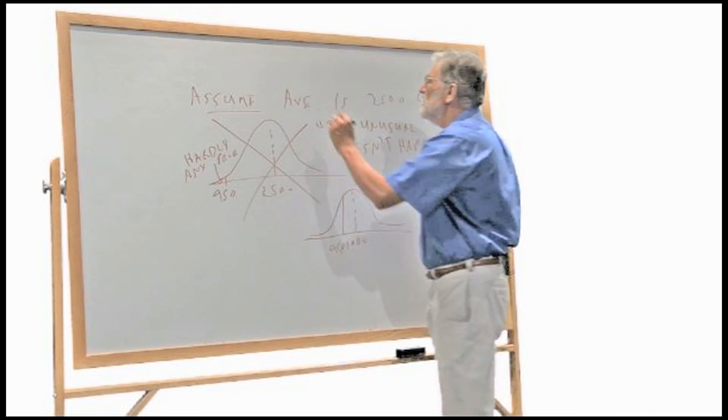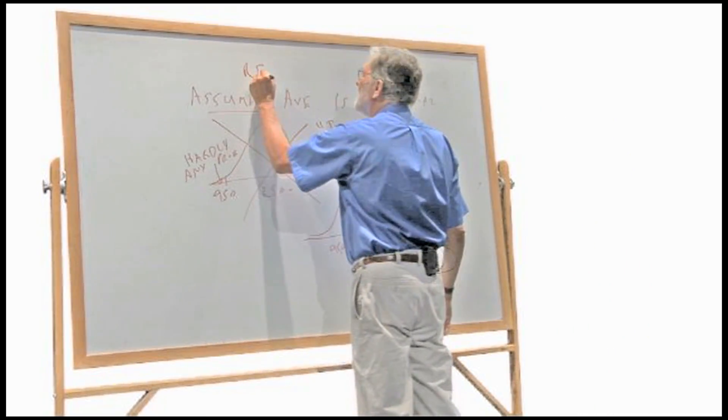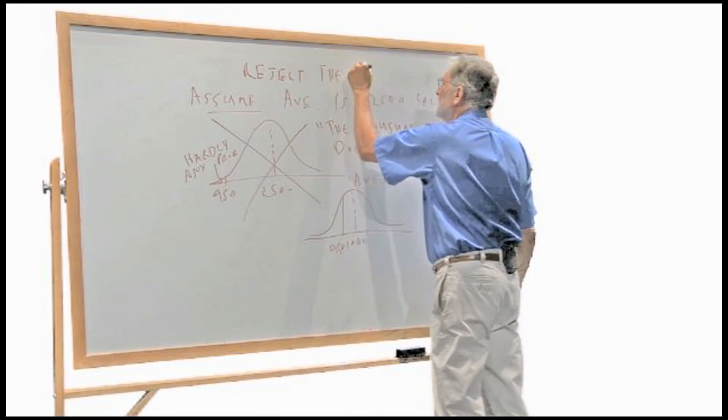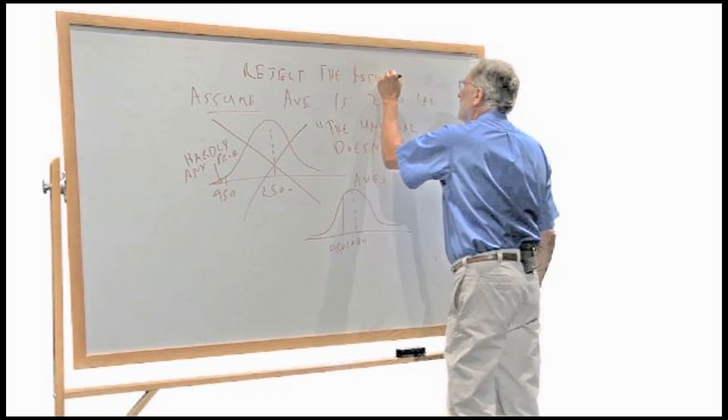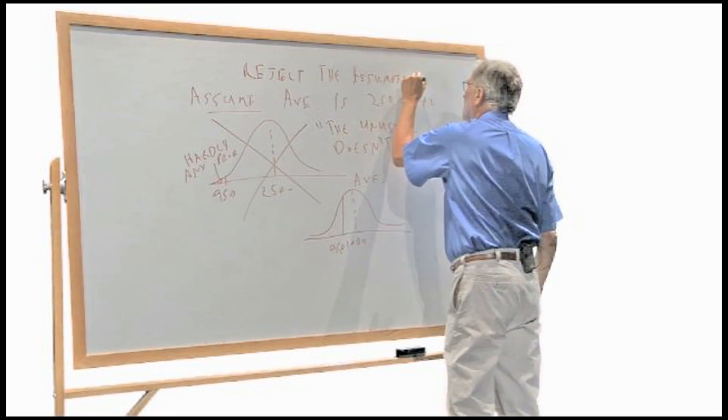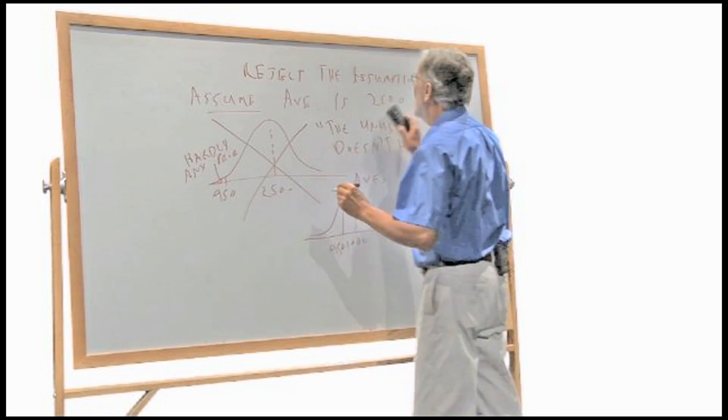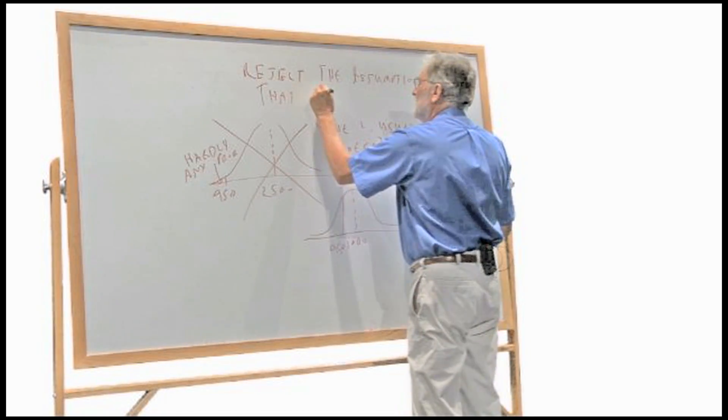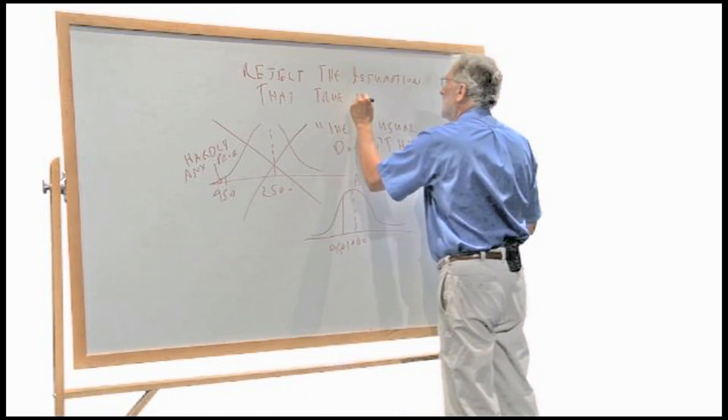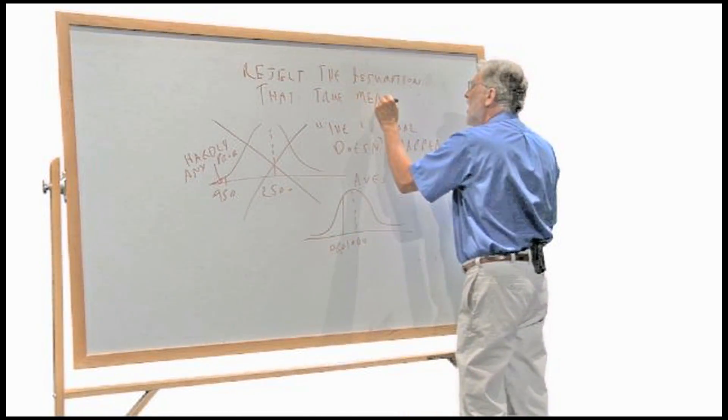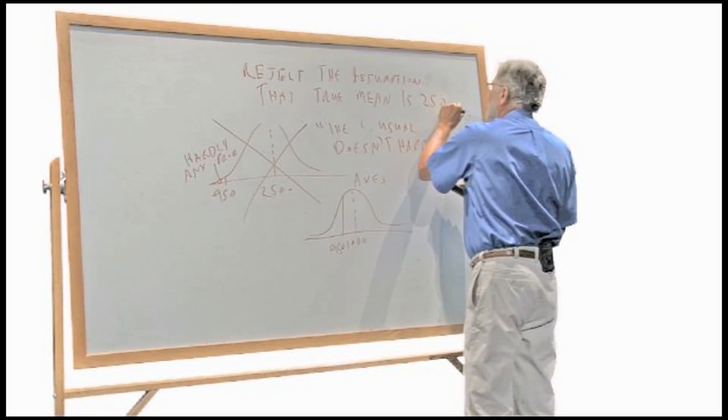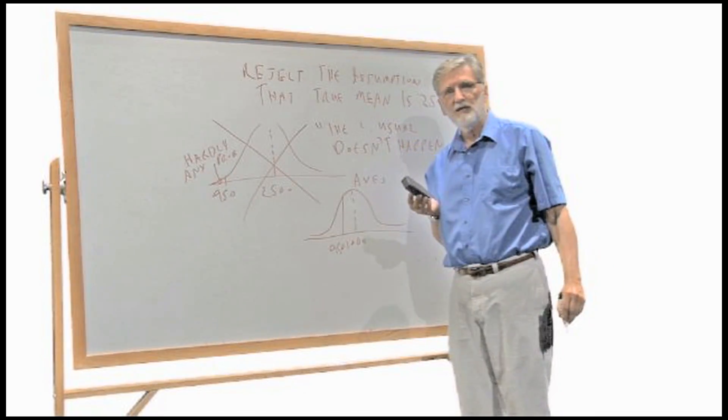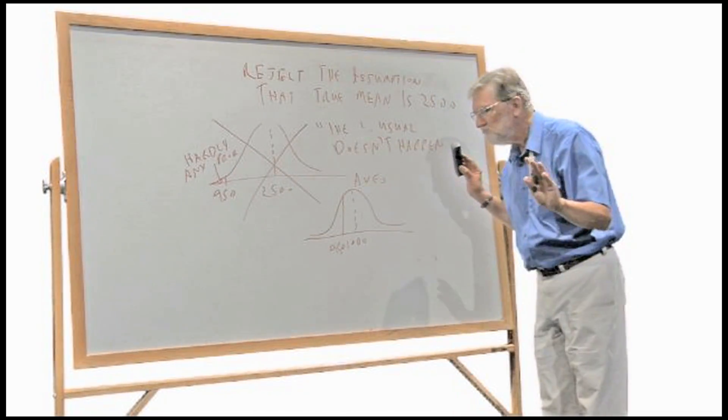And so they would, in the technical language of statistics, they would reject the assumption that the true mean was 2,500. Now, could they be wrong when they did that? Could they be wrong? Yeah, they could. Maybe you really saw something weird and unusual. But a statistician? No.